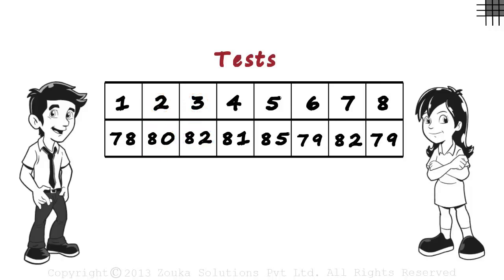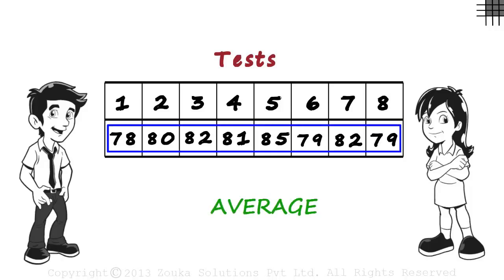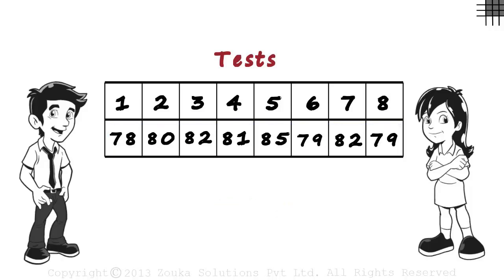And the other option Zen has is to tell his average score over the period. So he tells Zara that he scored around 80-81 in the previous year. Here, Zen just approximately averaged his score over the period to give Zara an idea about his performance. This is far more convenient as compared to mentioning the score in each of his tests.